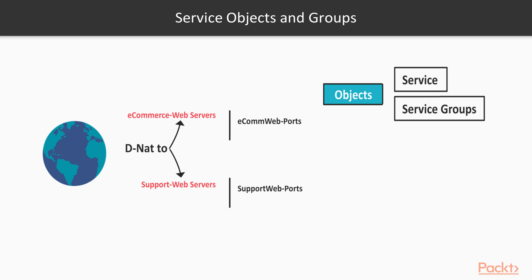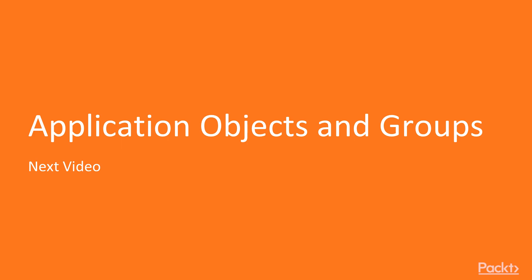Do yourself a favor — configure and allocate all device IPs and address groups, configure service objects, and add the ports for your applications. That firewall policy table should look like a picture — everything completely organized into address objects, service objects, and object groups. We've reached the end of this video. In the next video, we're going to be discussing application objects and groups, and how the Palo Alto can identify traffic based on applications. Thank you.